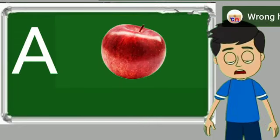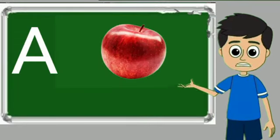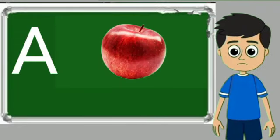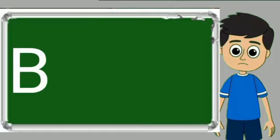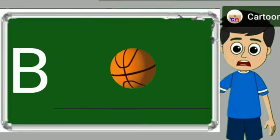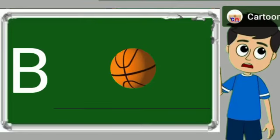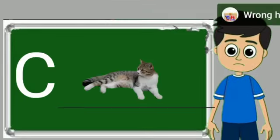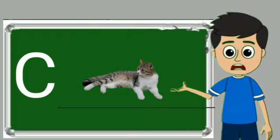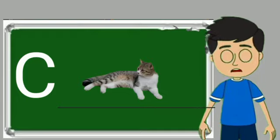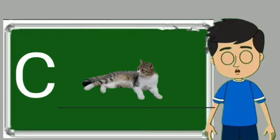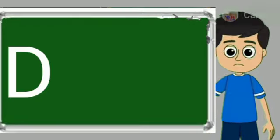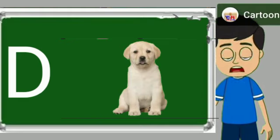A for apple. Apple means save. B for ball. Ball means gain. C for cat. Cat means billy. D for dog.